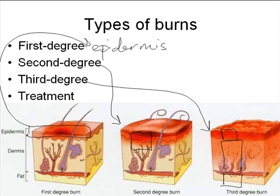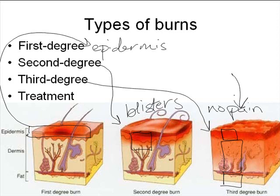Third-degree burns tend to have no pain associated with them because we have completely destroyed the sensory receptor cells — the pain receptor cells — that would have signaled the brain that the tissue was damaged. Typically, people who have third-degree burns are still in a lot of pain because surrounding the regions of a third-degree burn will be regions of second-degree burns, and those are very painful. Second-degree burns are where we often see blisters forming. We do get epidermal regeneration in second-degree burns, whereas with third-degree burns, because we completely destroy the tissue, it's not possible for the epidermis to regenerate, and so we often get people having very extensive scarring and disfigurement.